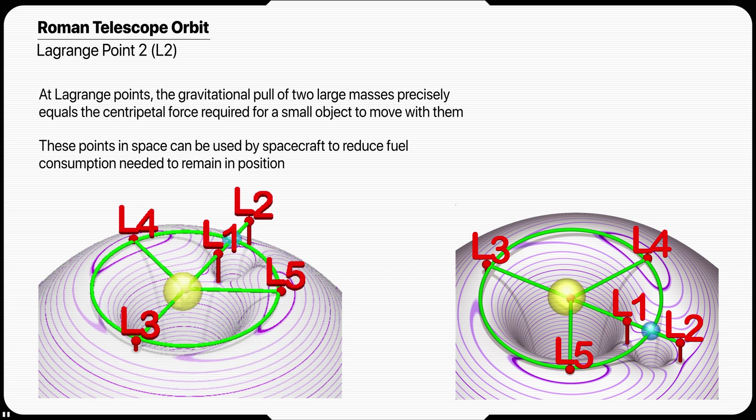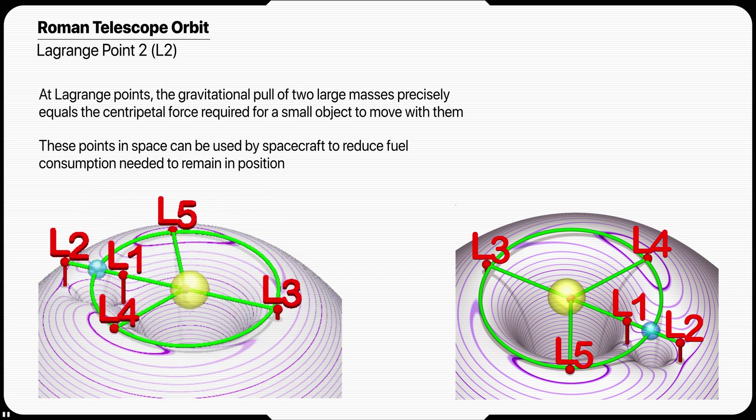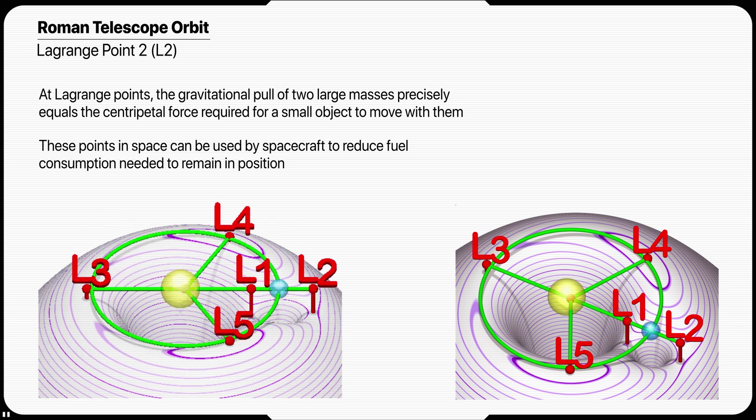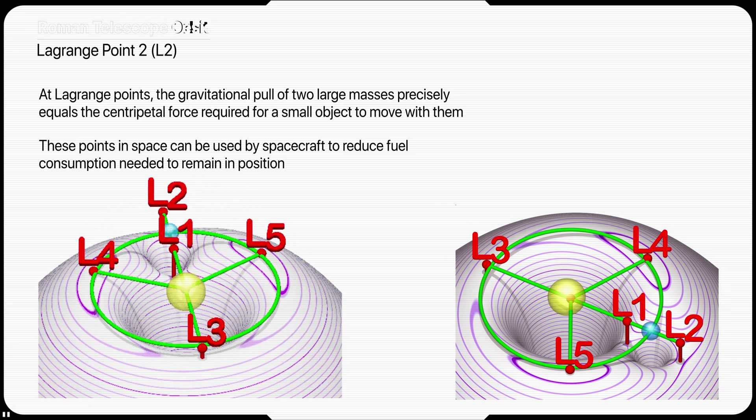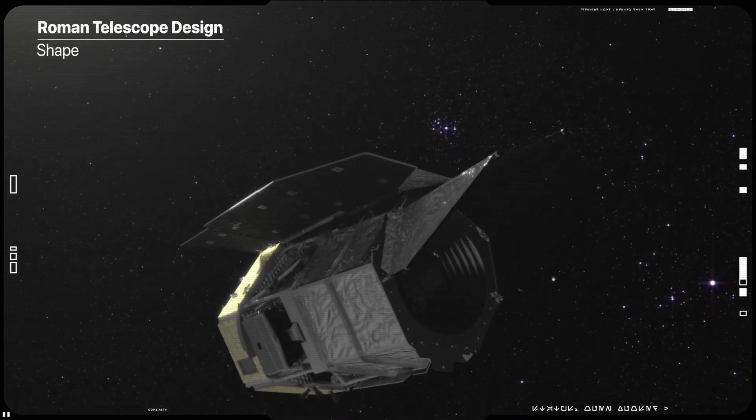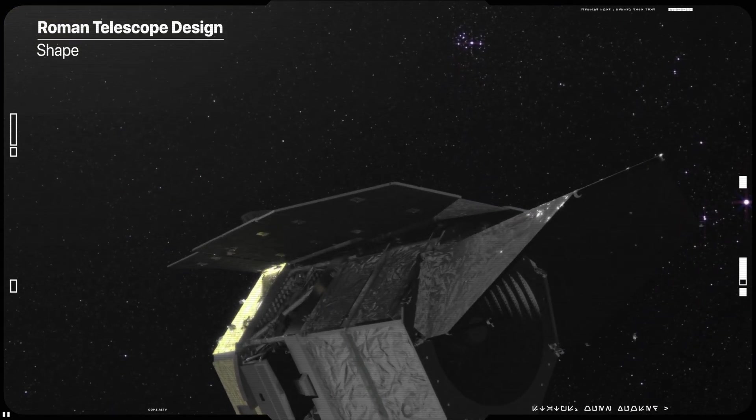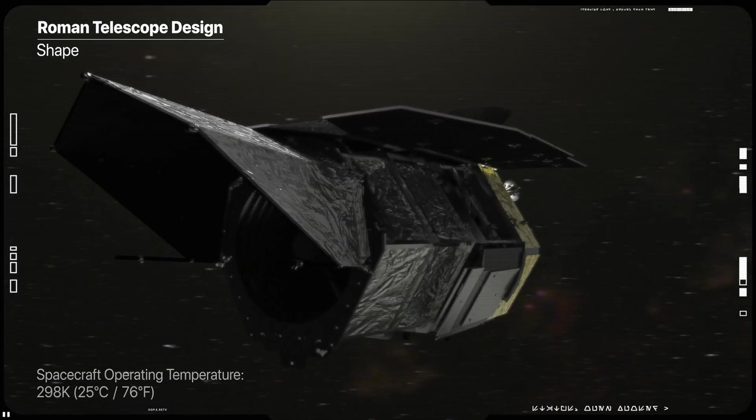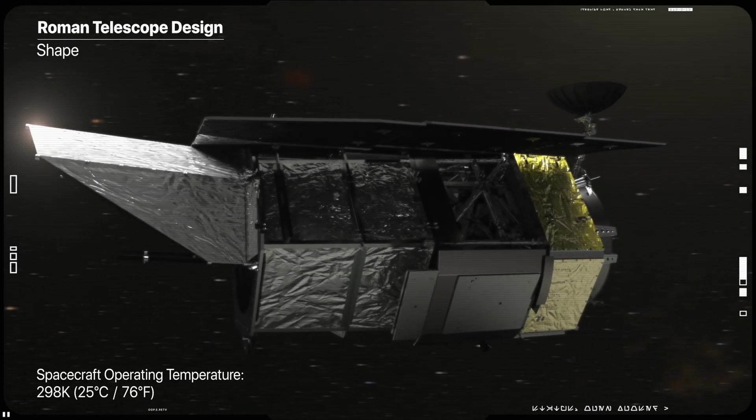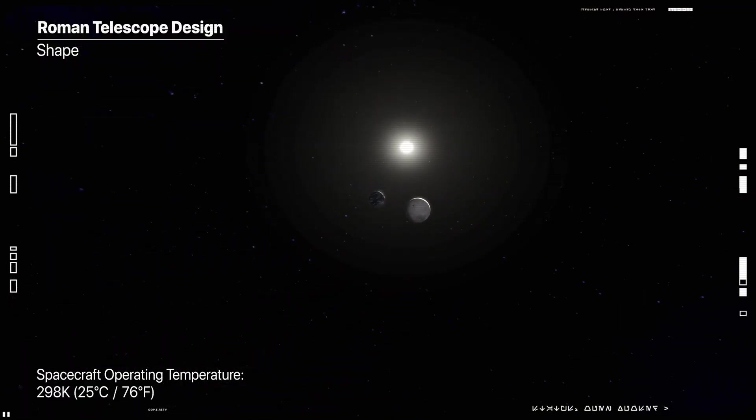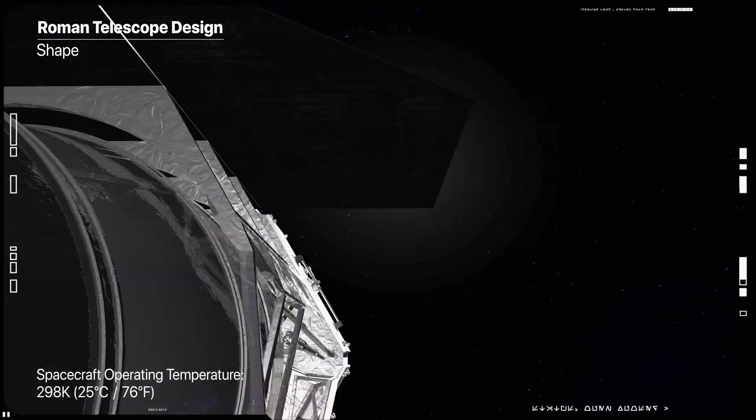At this special place in space, gravitational force is balanced to keep objects in steady orbits with very little assistance. Roman's barrel-like shape will help block out unwanted light from the Sun, Earth and Moon, and the spacecraft's distant location will help keep the instruments cool. The thermal stability of an observatory at L2 will provide a tenfold improvement beyond Hubble in much of the data Roman will gather.